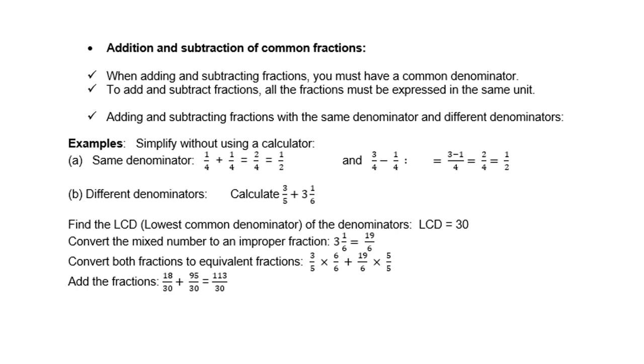If the denominators are different, for instance, three fifths plus three and one sixth, then you must find the LCD, the lowest common denominator. The LCD will be thirty. Convert the mixed number to an improper fraction. Three times six is eighteen, plus one is nineteen over six. Convert both fractions to equivalent fractions, both multiplied by six over six to give you thirty.